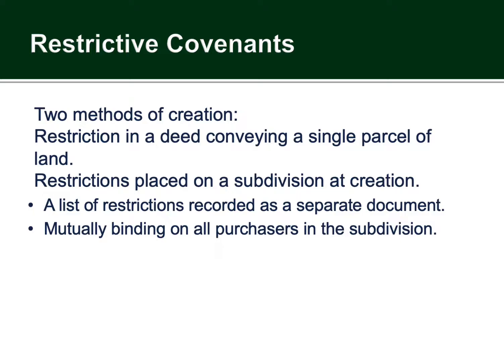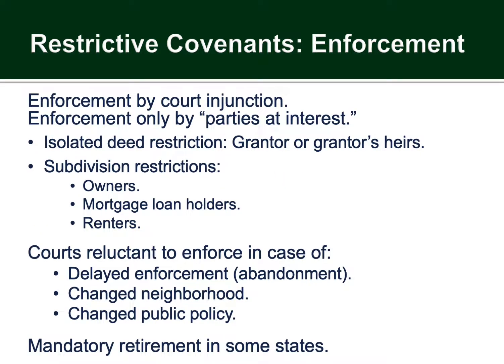Restrictive covenants tend to get recorded on deeds for a property — sort of like a record of ownership or transfer of ownership, which we'll talk about more later. The key point is that restrictive covenants tend to persist on a property even after it's been bought or sold multiple times. Restrictive covenants are private in nature, meaning they were created by the developer or other party who owned the land at some point. If laws change to make those covenants illegal, then those laws override any private restrictive covenant that might be on the property.